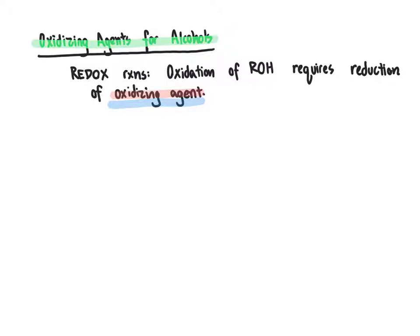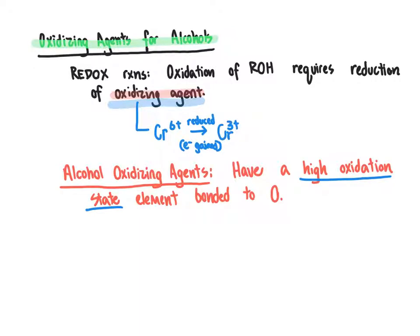The oxidizing agent will go from a relatively high oxidation state to a lower oxidation state. For example, the oxidizing agent could be going from chromium 6+ to chromium 3+. The chromium is getting reduced during that process because it's going from a higher positive charge to a lower positive charge, meaning electrons are being gained by the chromium, and as a consequence the alcohol molecule is getting oxidized. All of the oxidizing agents we'll look at will have an element in a high oxidation state directly bonded to oxygen.